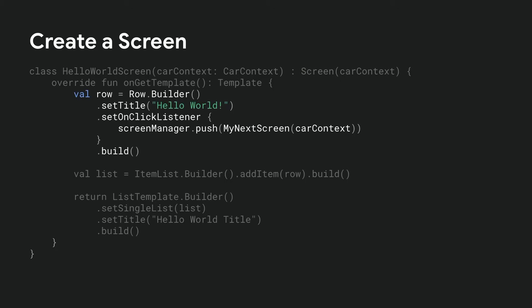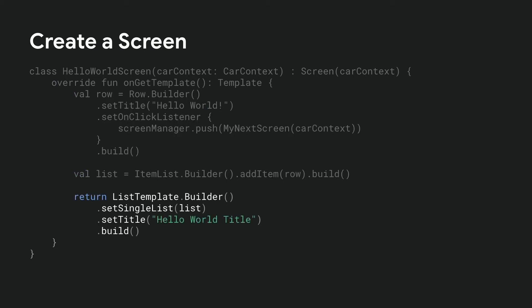We will create a very simple list template with one row of text. First, we create the row object. When the user taps on the row, we use the screen manager to push the next screen. Then, we create the list with the row and create a list template. For the next few slides, we will show a few things you can do with the library. For a comprehensive walkthrough of the library features, please refer to the car app library developer documentation.